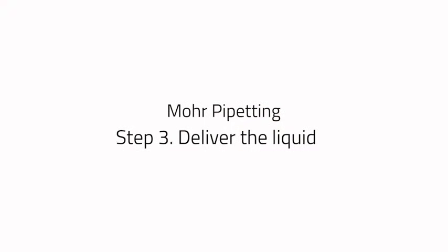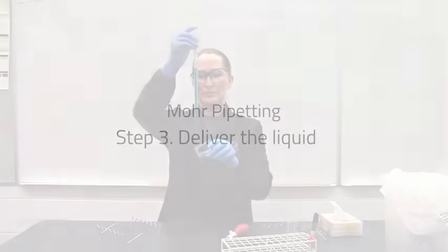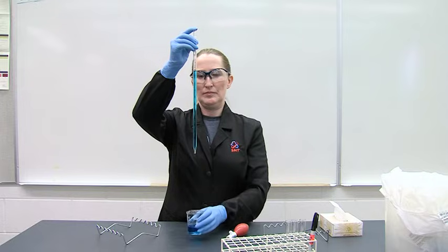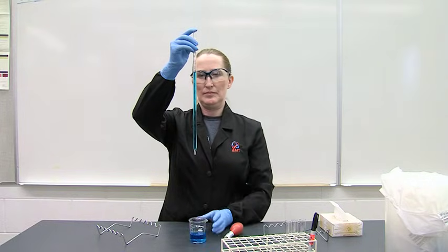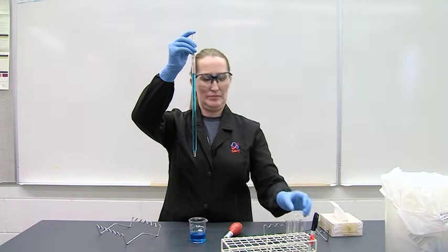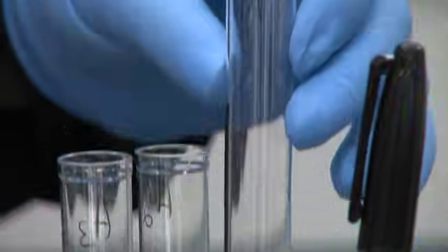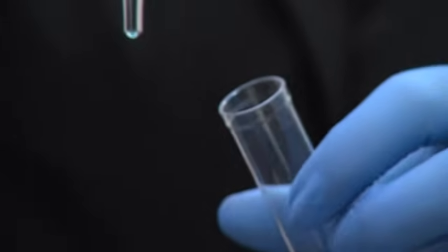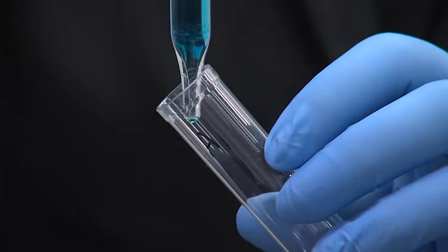Step 3. Deliver the liquid. Move the reagent beaker out of the way and angle the labeled receiving vessel into position. The pipette remains vertical. The tip of the pipette touches the side of the receiving vessel.